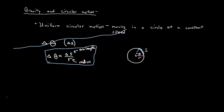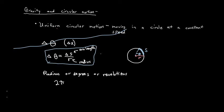We have units to measure angular positions. We'll typically use radians or degrees, and occasionally revolutions. These all represent the same thing in different units. To convert: two pi radians equals 360 degrees, which also equals one revolution — one full trip around a circle.